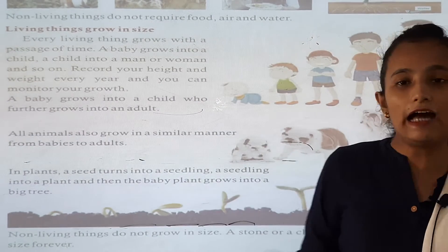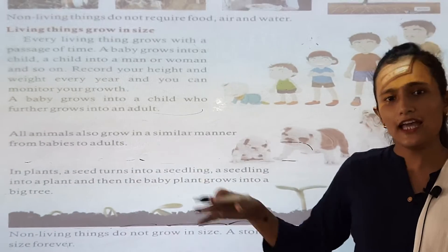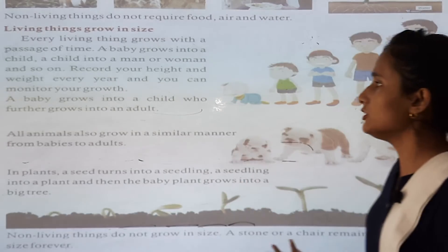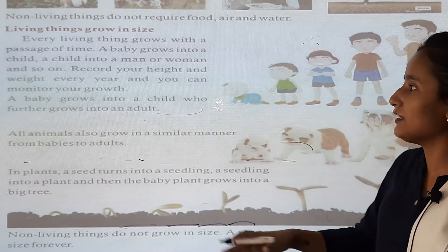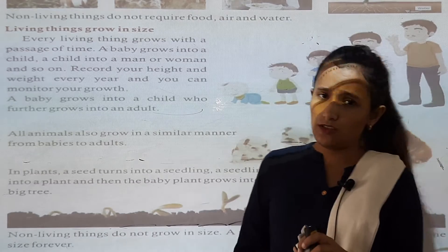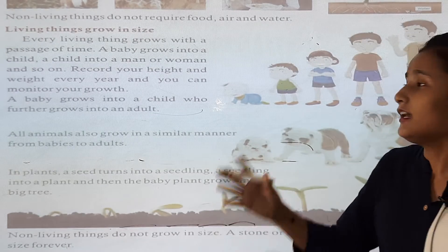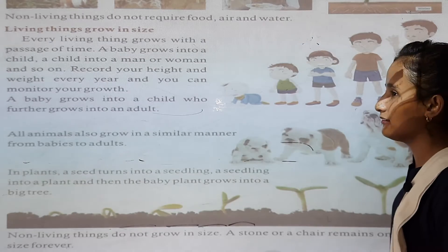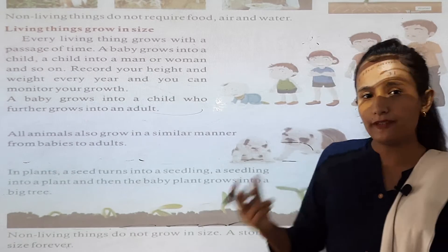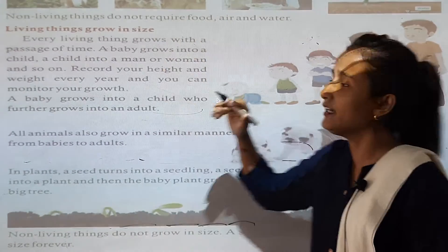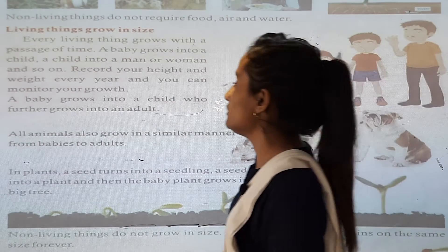You can test your height and weight also. For example, when you are a baby, your weight may be 15 kg or 20 kg. When you are big, when you become an adult, your height and size have grown much larger. A baby grows into a child, who further grows into an adult.